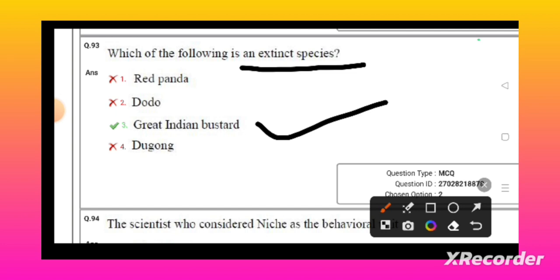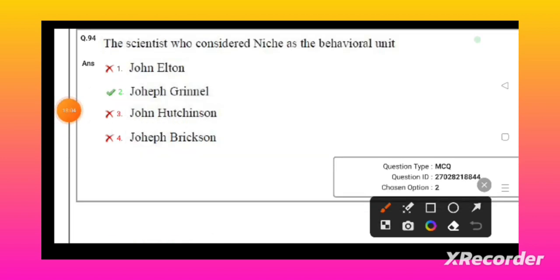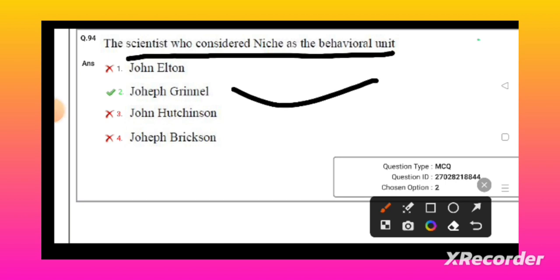The scientist who considered the niche as a behavioral unit: Joseph Grinnell gave the niche as the behavioral unit. Which physician is the father of toxicology in 16th century? Paracelsus.